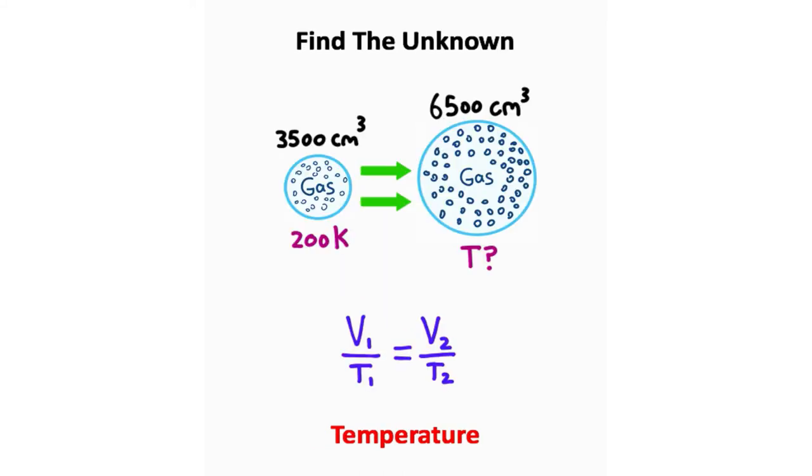We'll finish up with some fluid mechanics, where we have this gas inside a flexible container. Our container has a volume of 3,500 cubic centimeters initially, and an initial temperature of 200 Kelvin. If our volume increases to 6,500 cubic centimeters, what's the new temperature?